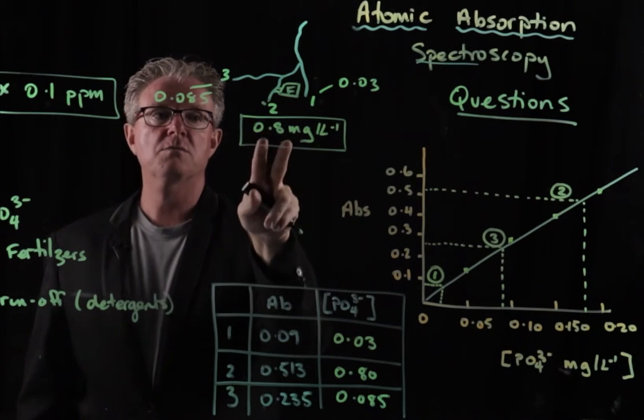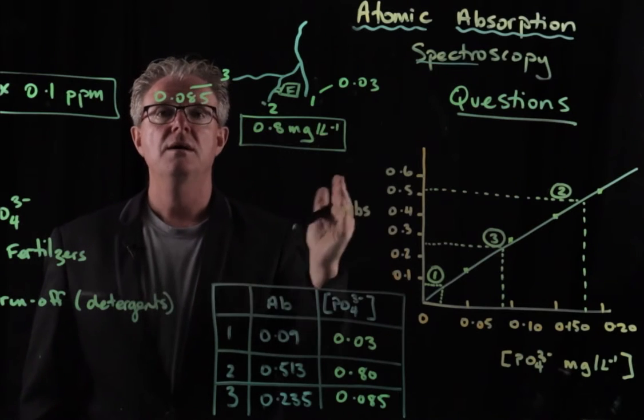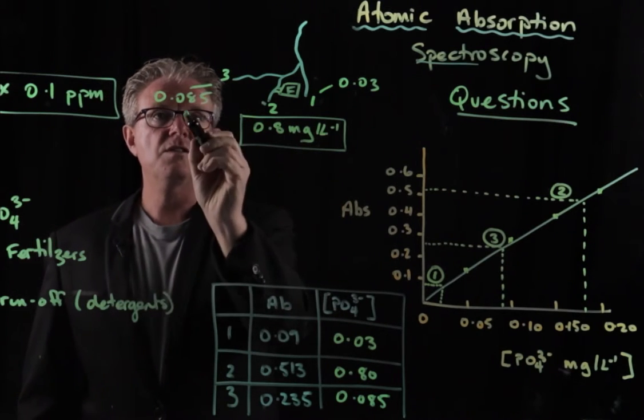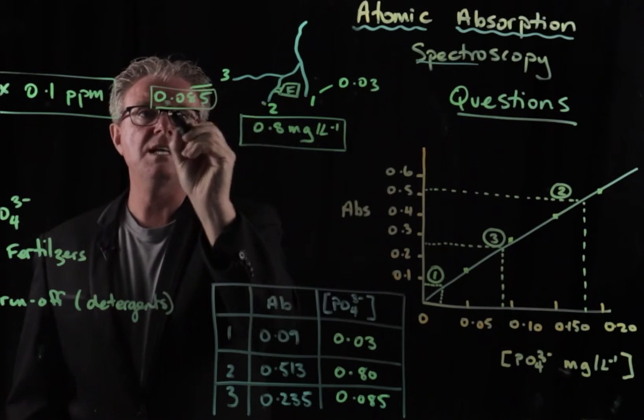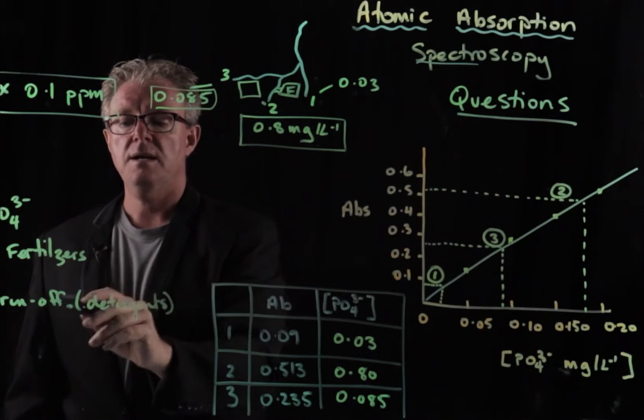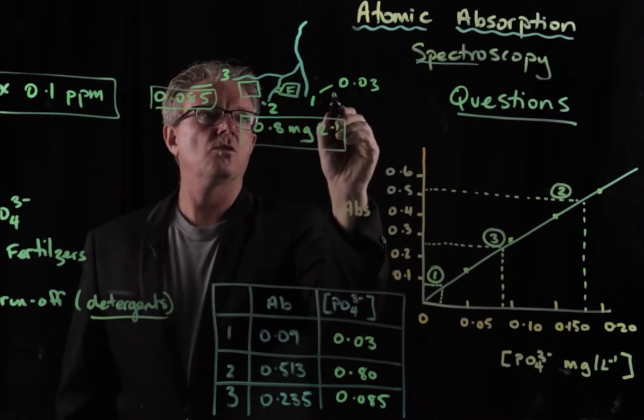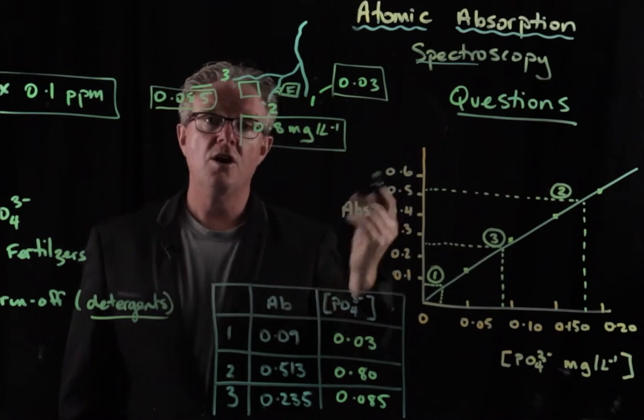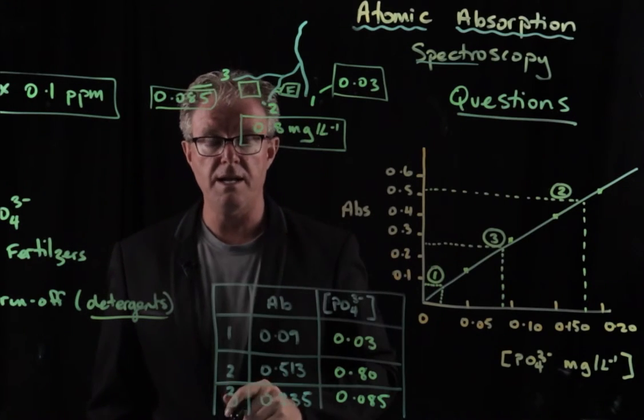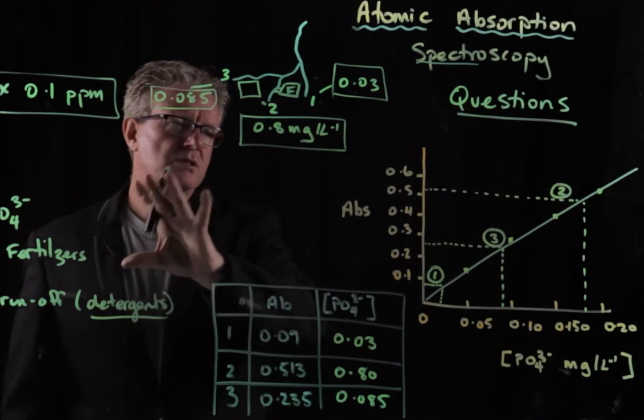And so a possible reason why that could be so high was because there was farm fertilizers running into the water. Then we could say that this is intermediate because that might be downstream from an urban area where they had runoff from detergents. And, of course, 0.03, nice, pristine, clean water. And so we don't have to worry about anything at all there. So that was the question there.